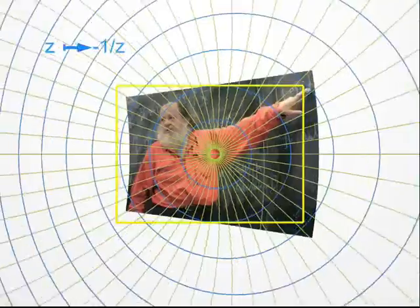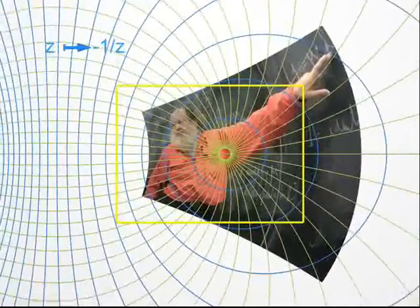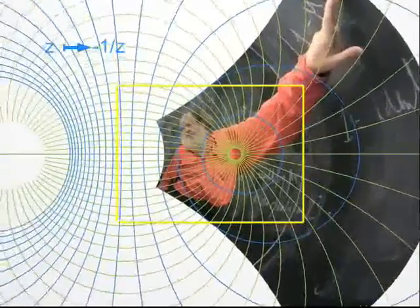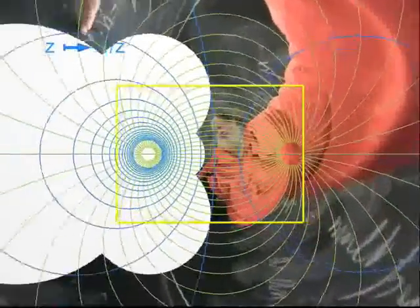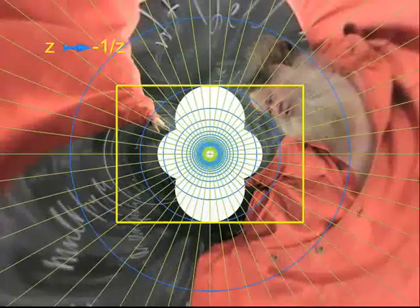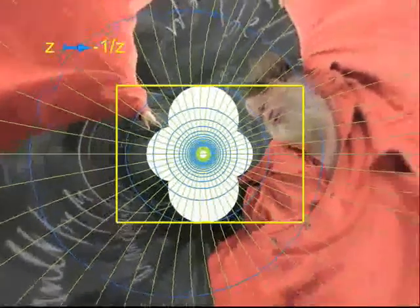Now let's go to a new transformation, sending the point Z to minus 1 over Z. Don't forget, with complex numbers one can add, multiply, but also divide. Not by zero, of course. Doesn't this image remind you of the Sistine Chapel? Large complex numbers with a large modulus become small when one takes their inverses, and conversely.